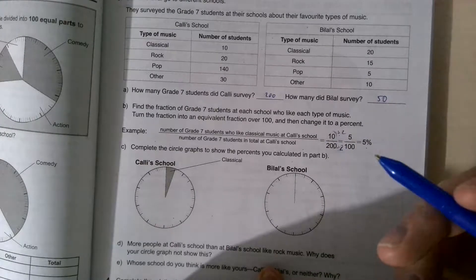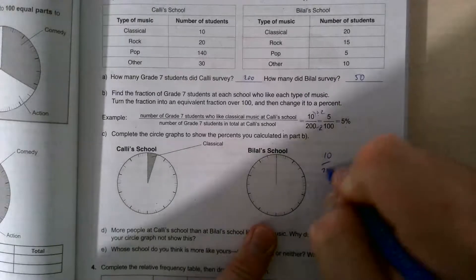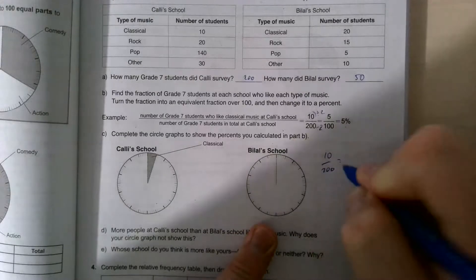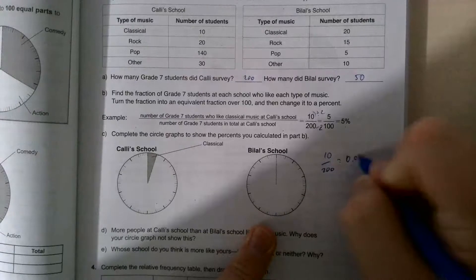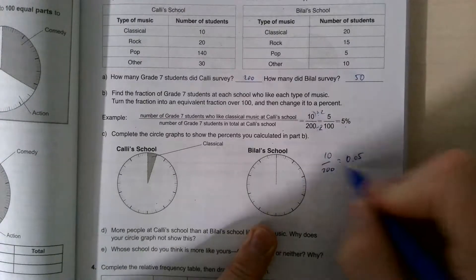Another method you could do, if you'd like to, is we have 10 over 200, and we just figure out what does that divide to. So that's going to equal 0.05. And then this number right here, if we'd like to find what it is, it's a percent.